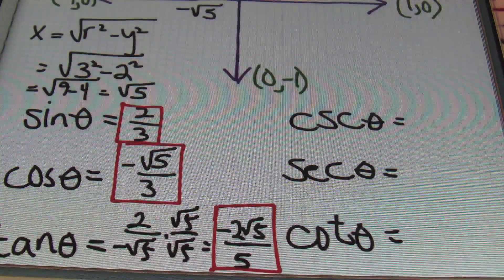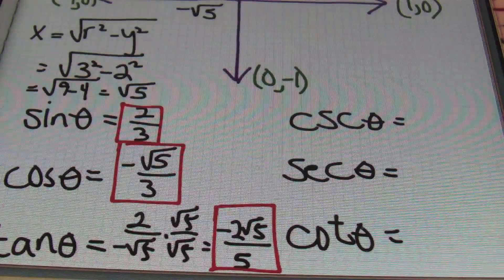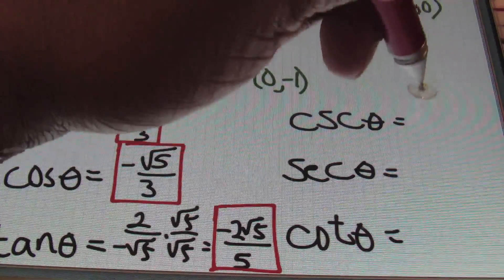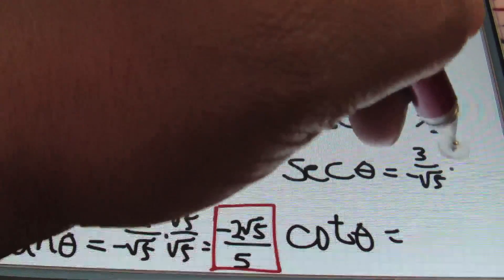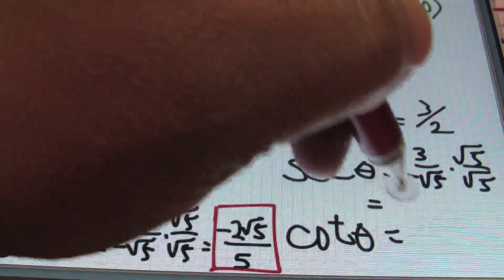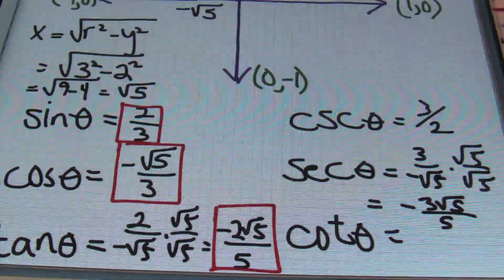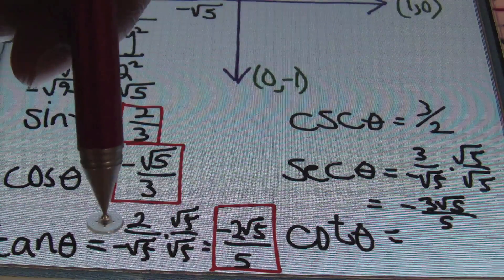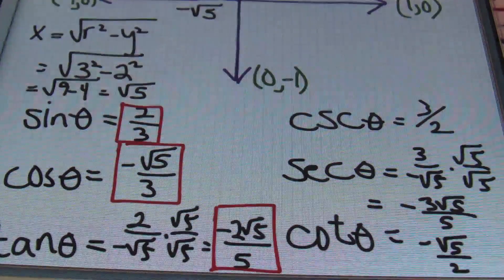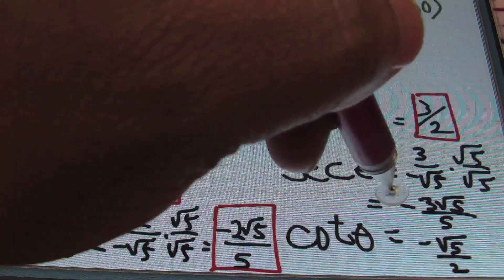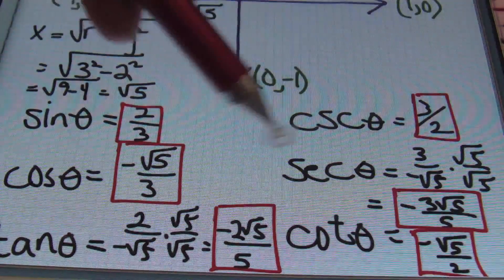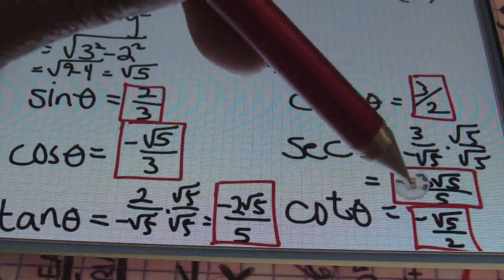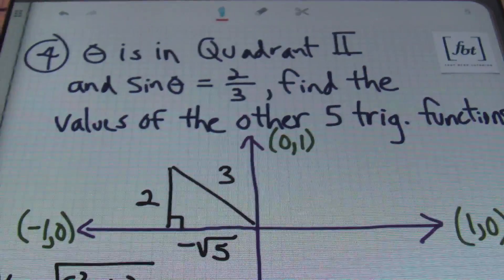Remember that the cosecant, secant, and cotangent values are the reciprocals of these first three values. So flipping the sine value, I'll end up with three halves. Flipping the cosine value, I'll end up with 3 over negative square root of 5, which I'll need to rationalize, and that'll give me a negative 3 square root of 5 over 5. Then looking at my cotangent value, that'll be the reciprocal of 2 over negative square root of 5 — I'll write it as a negative square root of 5 over 2. So the cosecant theta value is three halves, secant theta equals to negative 3 square root of 5 over 5, and cotangent theta value is negative square root of 5 over 2. And that's how you solve problem number 4.